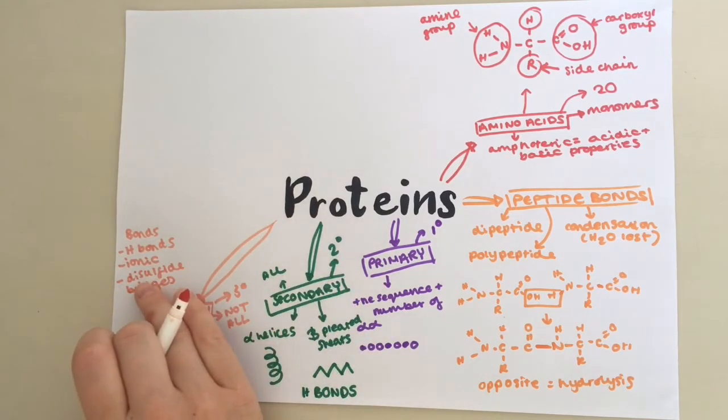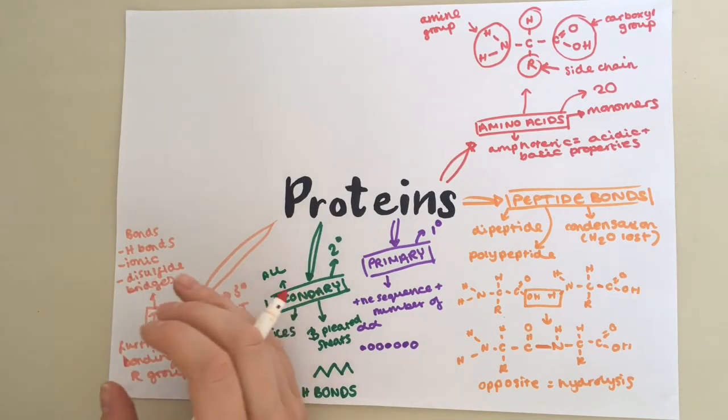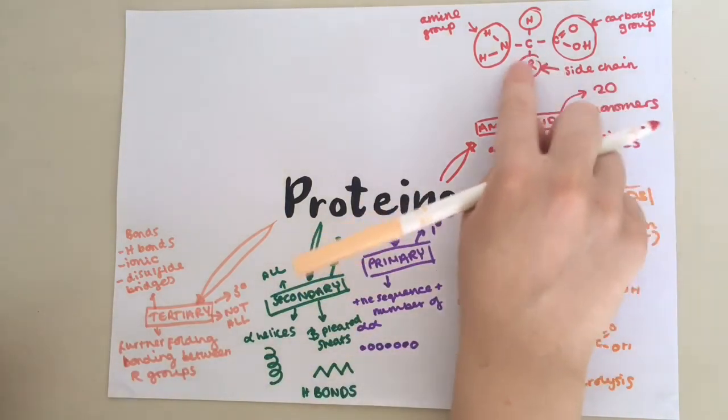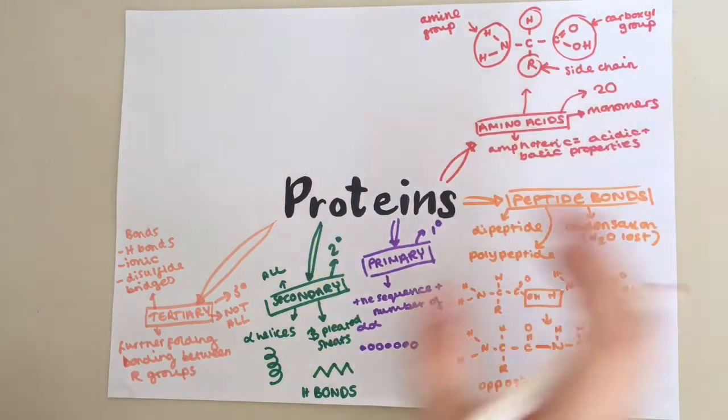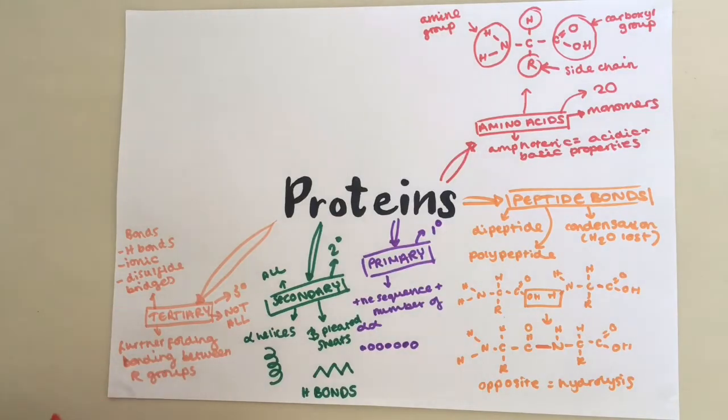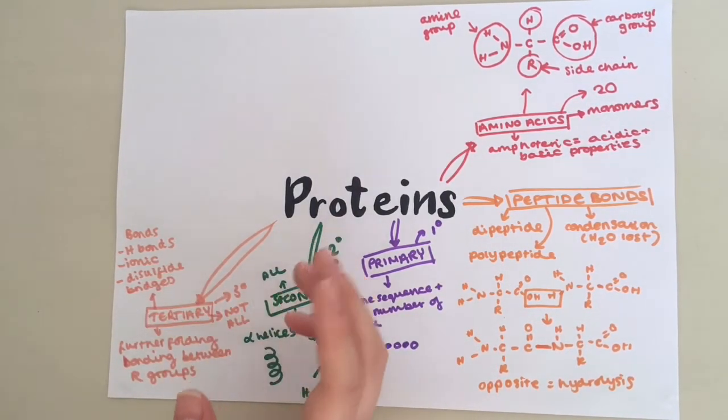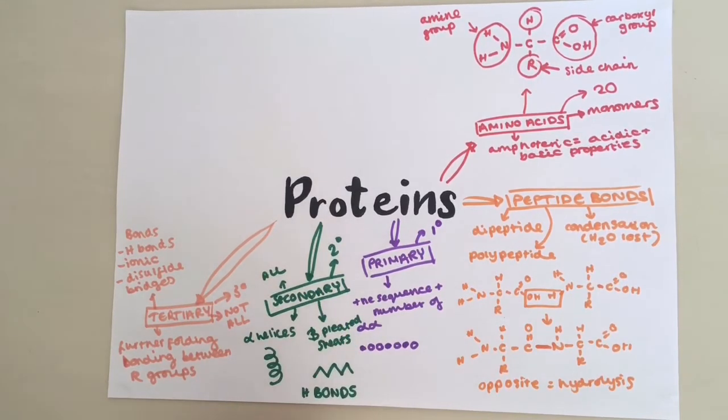These only occur whenever two molecules of the amino acids, cysteine, come close together. Because you've got sulfur in this side chain of cysteine and therefore those sulfur atoms will bond. Remember, ionic bonds are attractions between negative and positive charges on the different parts of the molecule.